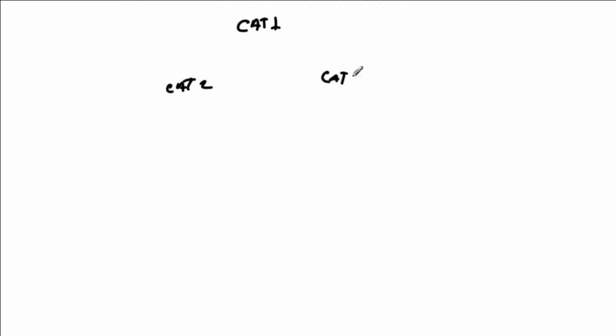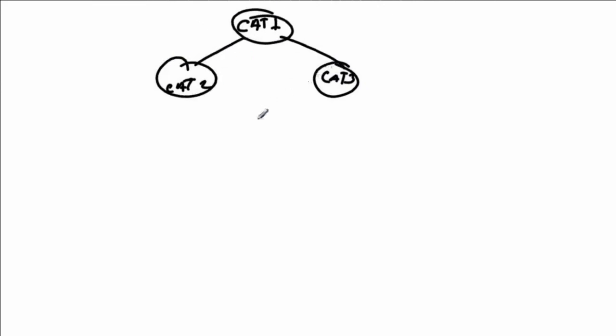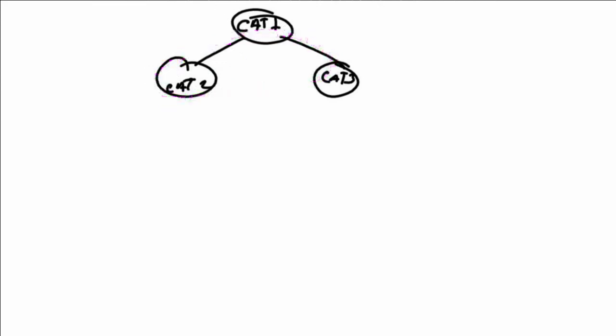When we look at our configuration, we're going to see devices like Cat1, Cat2, and Cat3 connected together. Until I close my loop, I have absolutely no problems. In this scenario, there's no way that traffic can go from here to here and back. However, the moment that I close this infrastructure, I now have the capacity, at the very least, to be able to create a looping scenario.